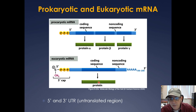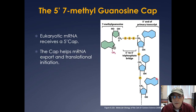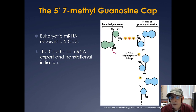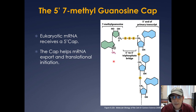Here's what the five prime cap looks like. It's a five prime seven-methylguanosine cap — a methyl group is added to the guanosine, connected to the primary mRNA transcript by a triphosphate bridge. So you have your seven-methylguanosine on the five prime end of your primary transcript. The cap helps with export of mRNA out of the nucleus and also with translational initiation, so it's very important in eukaryotes.